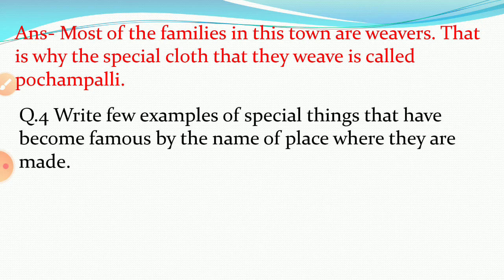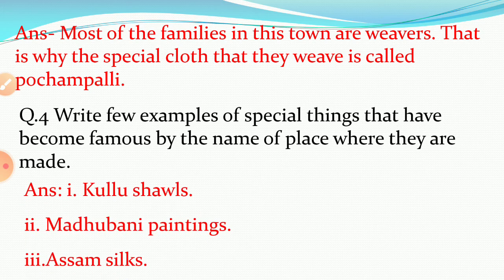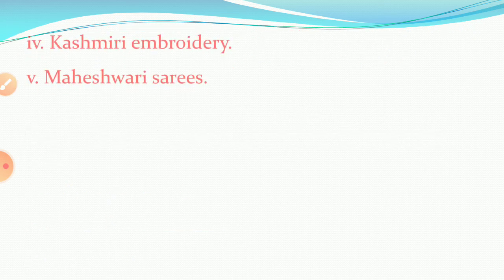Write examples of special things that have become famous by the name of the place where they are made. Answer is Kullu shawls, Madhubani painting, Assam painting, Kashmiri embroidery, and Maheshwari sarees.